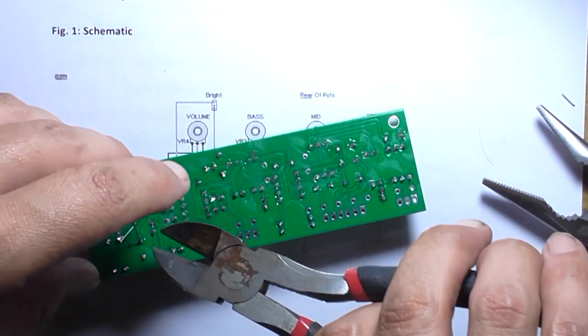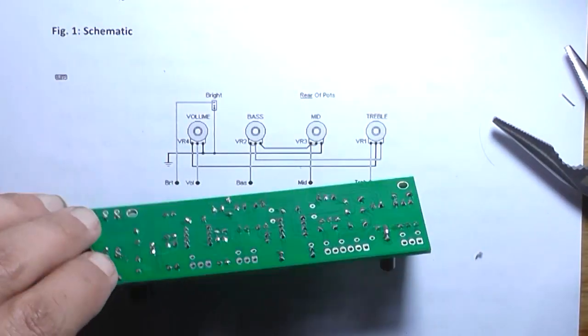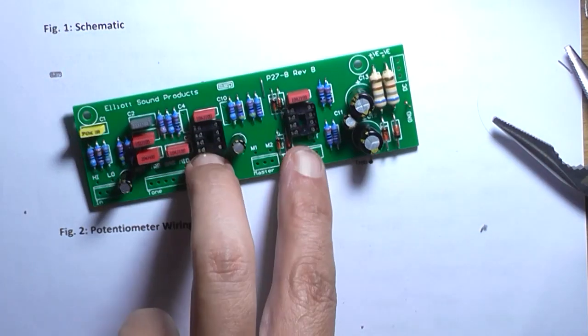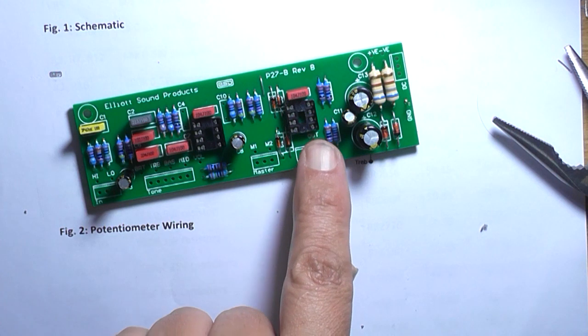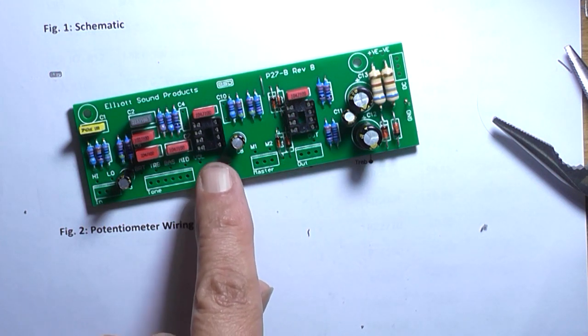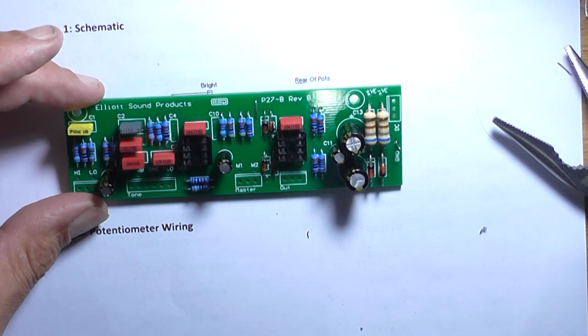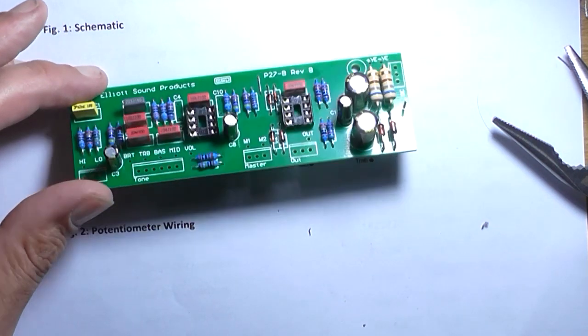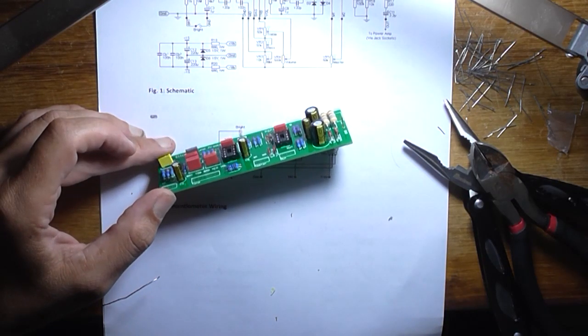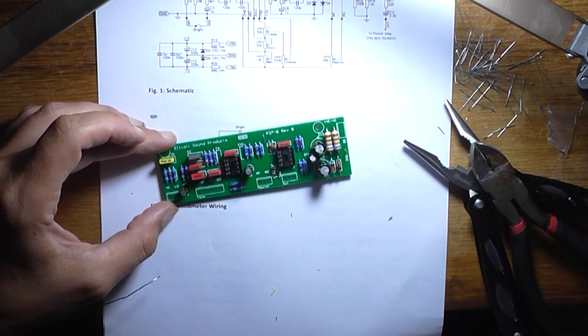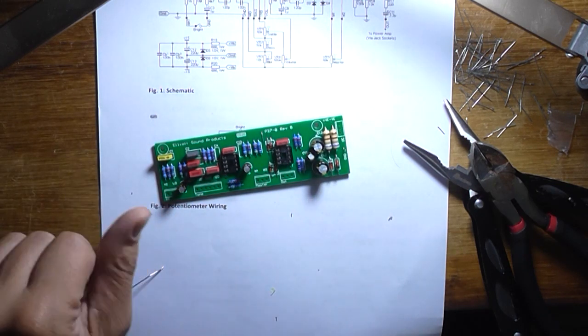Alright, cut these off. And that for now completes the construction. That's what it's going to look like when it's finished. I'm going to leave the op amps out of the sockets until it's connected to a suitable supply. I'm going to measure the voltages between pin 4 and pin 8, pin 4, pin 8, pin 4, pin 8, make sure there is 30 volts there roughly before putting them in because you'll end up blowing the IC sky high if it's the wrong voltage.